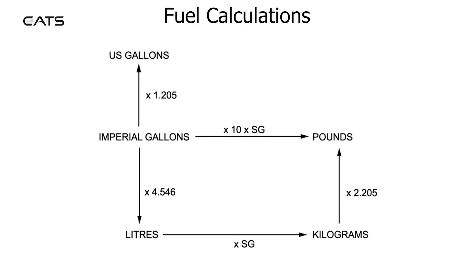Kilograms multiplied by 2.205 makes pounds. Imperial gallons multiplied by 4.546 makes litres. Litres multiplied by specific gravity makes kilograms.